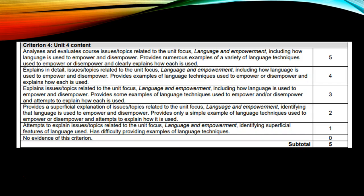This is the marking key for criterion four — Unit 4 for Part C. It says: analyses and evaluates course issues and topics related to the unit focus, which is language and empowerment, including how language is used to empower and disempower. It requires numerous examples of a variety of language techniques used to empower or disempower, and clearly explains how each is used. Overall, it's five marks. So this is what you're expected to do for your WACE practical oral examination across all three parts — Part A, B, and C — which counts for 35 marks in total.